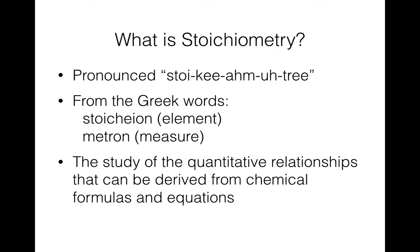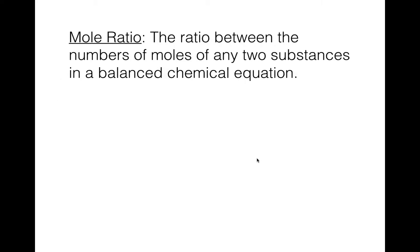Our last unit was chemical equations, and the unit before that was the mole. This unit combines those two things. We're going to be looking at quantitative relationships — doing calculations using chemical formulas in a balanced chemical equation, relating two substances connected via a chemical equation. The main piece of new information is what's called the mole ratio: the ratio between the amount of moles of two substances related in a chemical equation. It has to be balanced, and the two substances have to be in the same equation.